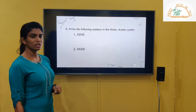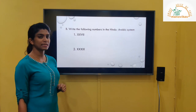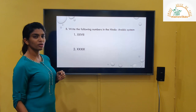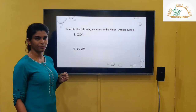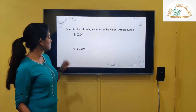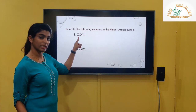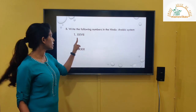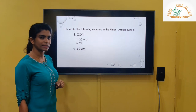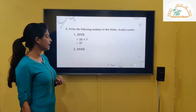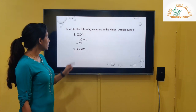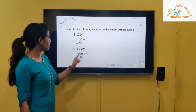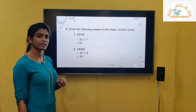Part B: write the following numbers in the Hindu-Arabic system. First, XXVII. Expand: two X's give 20, plus VII gives 7. So XXVII equals 27. Next, XXXIX: expand to three X's giving 30, plus IX is 9, so XXXIX equals 39.